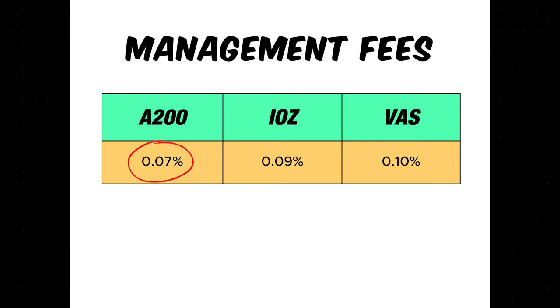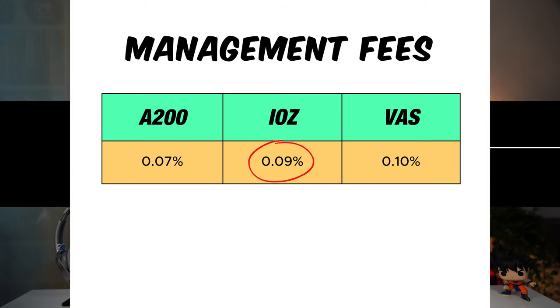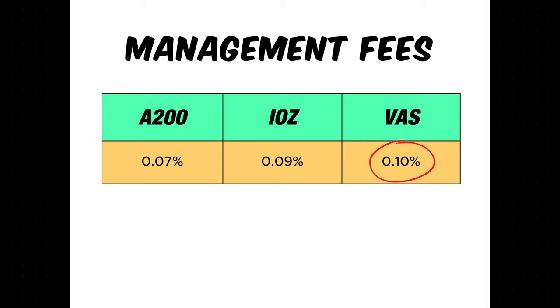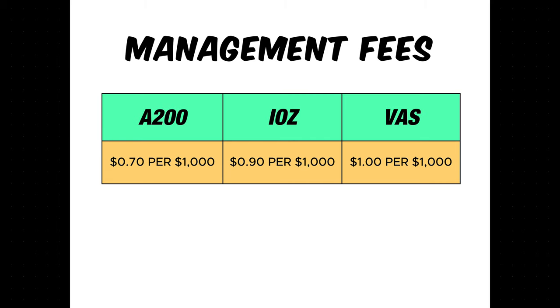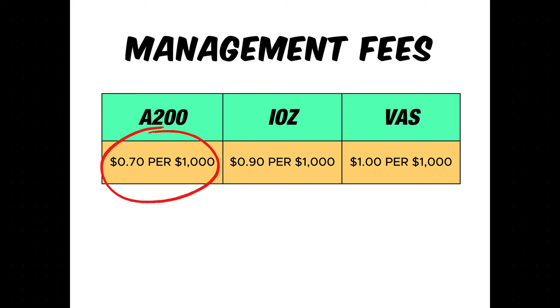Let's now move on to the management fees. The good news is all three funds have low-cost fees, so it is a great way for everyday Aussies to invest into Australia's largest companies at a relatively low cost. A200 is the cheapest at 0.07% — this could be because it's a newer fund trying to attract more investors, and tracking the Solactive index rather than the S&P index may be cheaper to run. The next cheapest is IOZ at 0.09%, and then VAS at 0.10%. To put it in context, with VAS you pay $1 per $1,000 invested; with IOZ, $0.90 per $1,000; and with A200, $0.70 per $1,000. So really, the difference is negligible in the grand scheme of things.